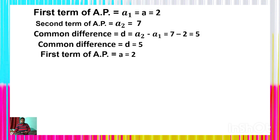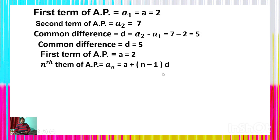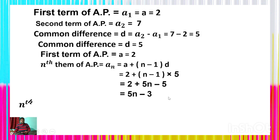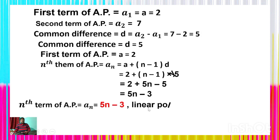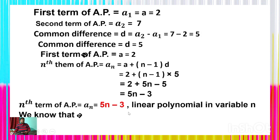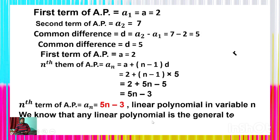With first term a = 2 and common difference d = 5, the nth term of the AP is a_n = a + (n−1)d = 2 + (n−1)×5 = 2 + 5n − 5 = 5n − 3. Thus a_n = 5n − 3. Note: any linear polynomial in n always indicates the general term of an AP — this is an important property of arithmetic progression.